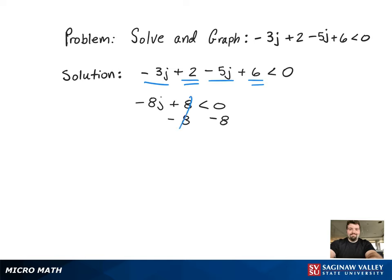Now the last thing left to do, to get j by itself, is just to divide by negative 8. Remember though, when dividing by negative 8 in an inequality problem, that means you have to flip the inequality symbol, leaving just j greater than 1.